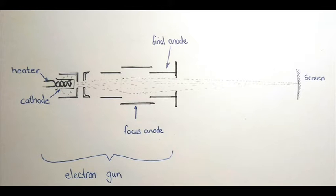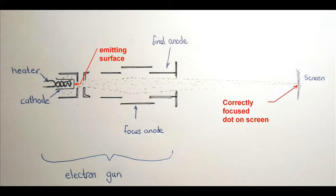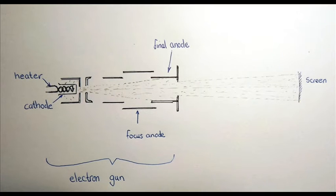In normal operation the electrons are focused onto a sharp spot on the screen. In this setup we want a diverging beam to produce a large image.